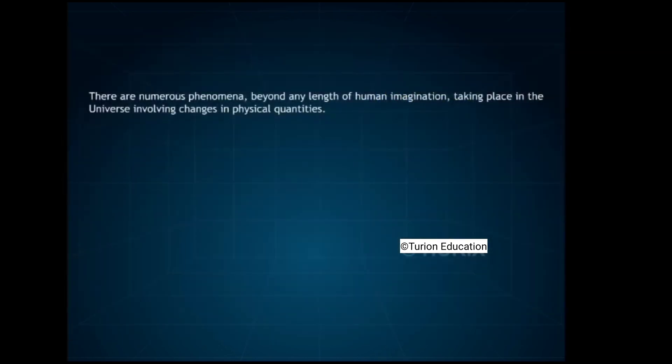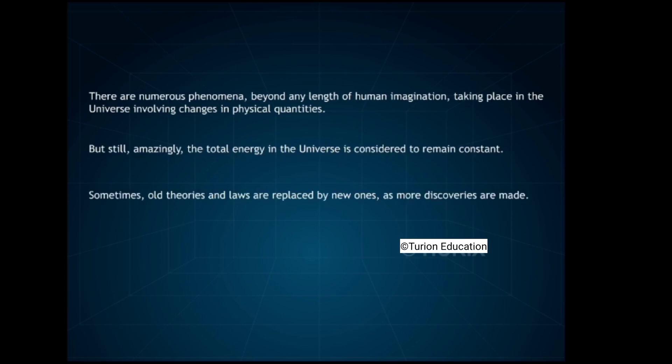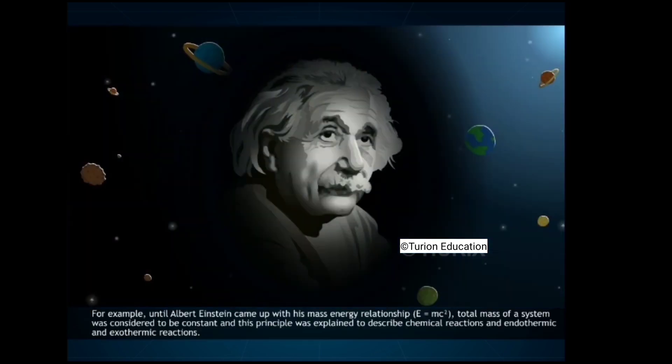There are numerous phenomena, beyond any length of human imagination, taking place in the universe involving changes in physical quantities. But still, amazingly, the total energy in the universe is considered to remain constant. Sometimes, old theories and laws are replaced by new ones, as more discoveries are made. For example, until Albert Einstein came up with his mass-energy relationship, E is equal to mc², total mass of a system was considered to be constant. And this principle was explained to describe chemical reactions and endothermic and exothermic reactions.